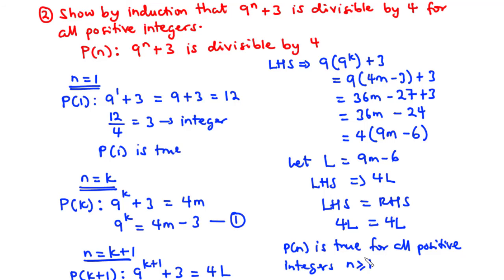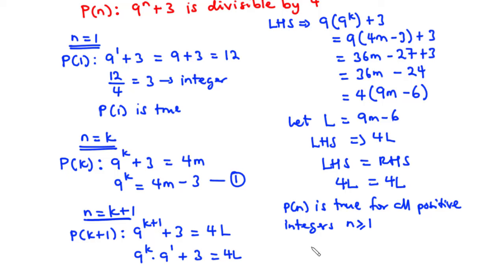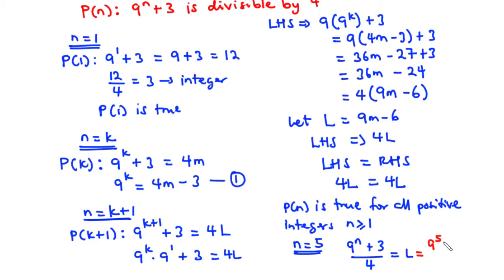We can test our solution by substituting any value of n. Let's assume n equals 5. From the original statement, (9^5 plus 3) divided by 4 should equal some integer l. Now 9^5 equals 59,049, so (59,049 plus 3) divided by 4 gives l equals 14,763.